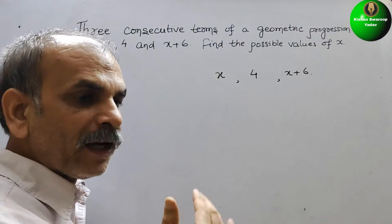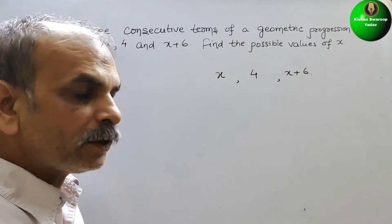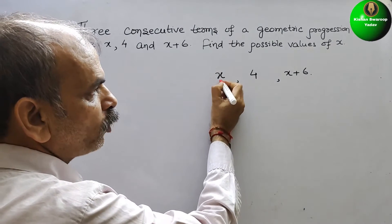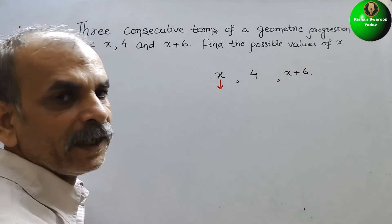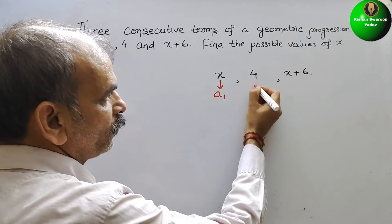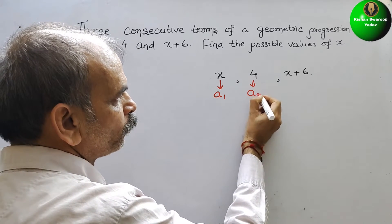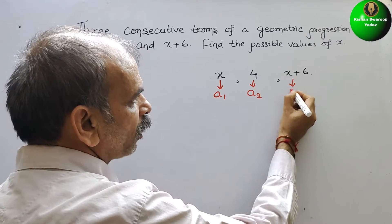Consecutive means it will be one by one. Therefore, suppose we have taken this as a1, this will be a2, and this will be a3.